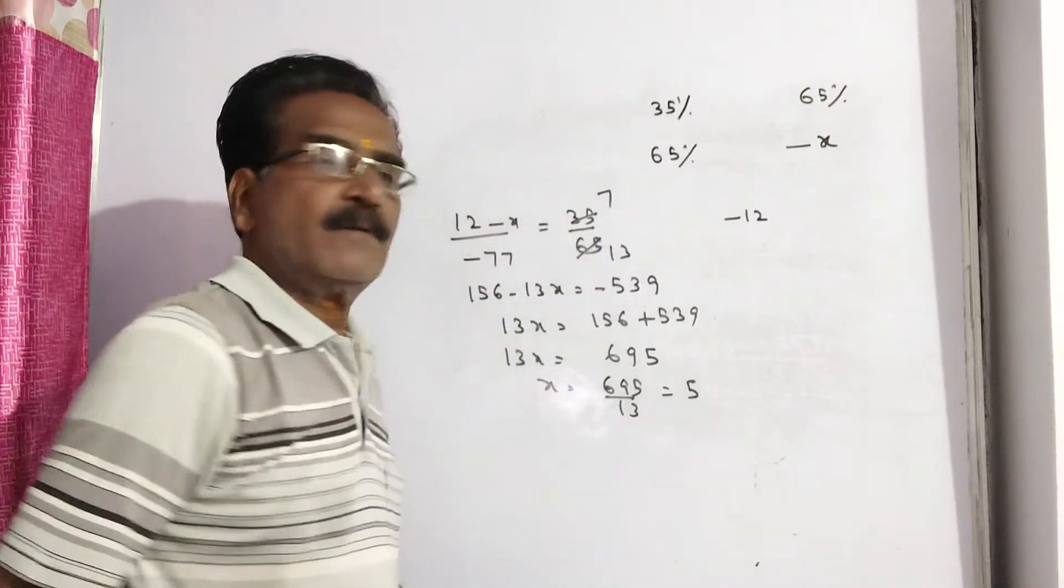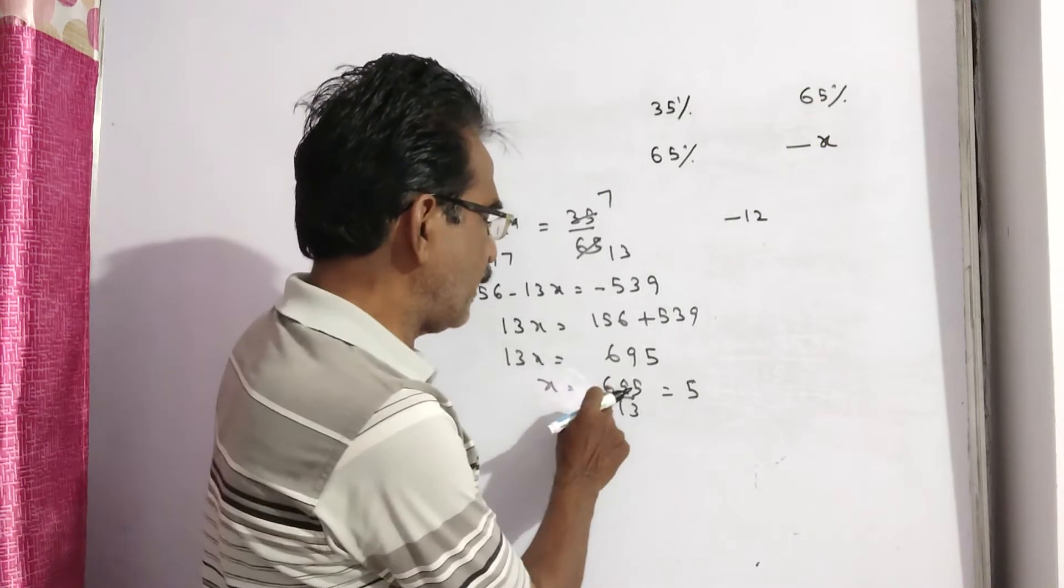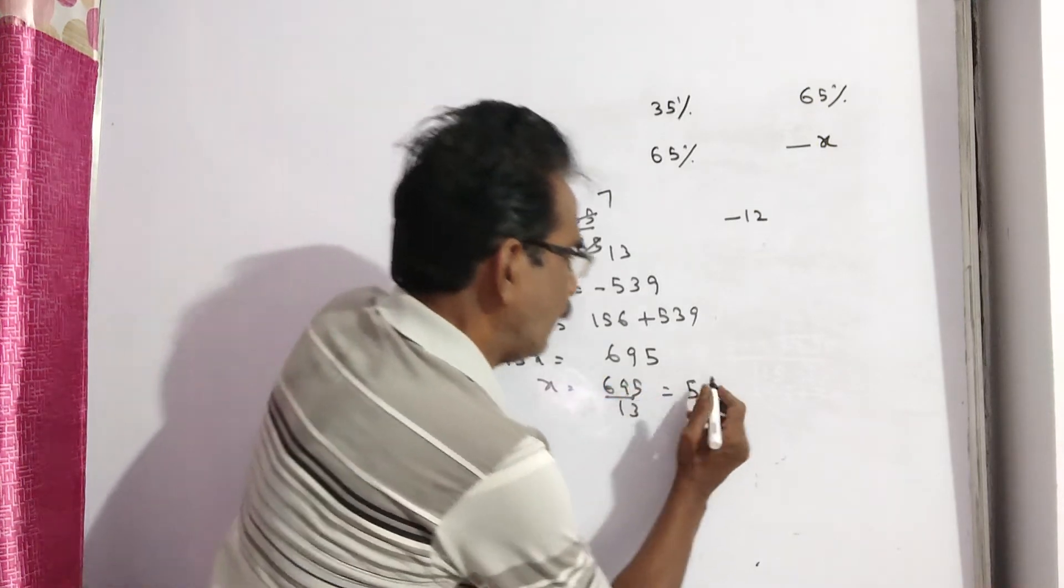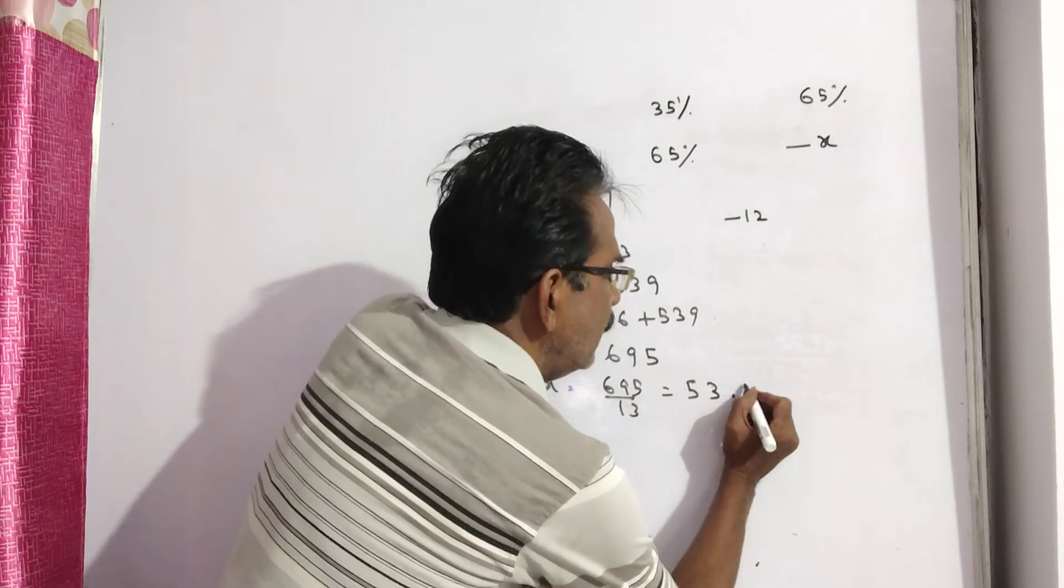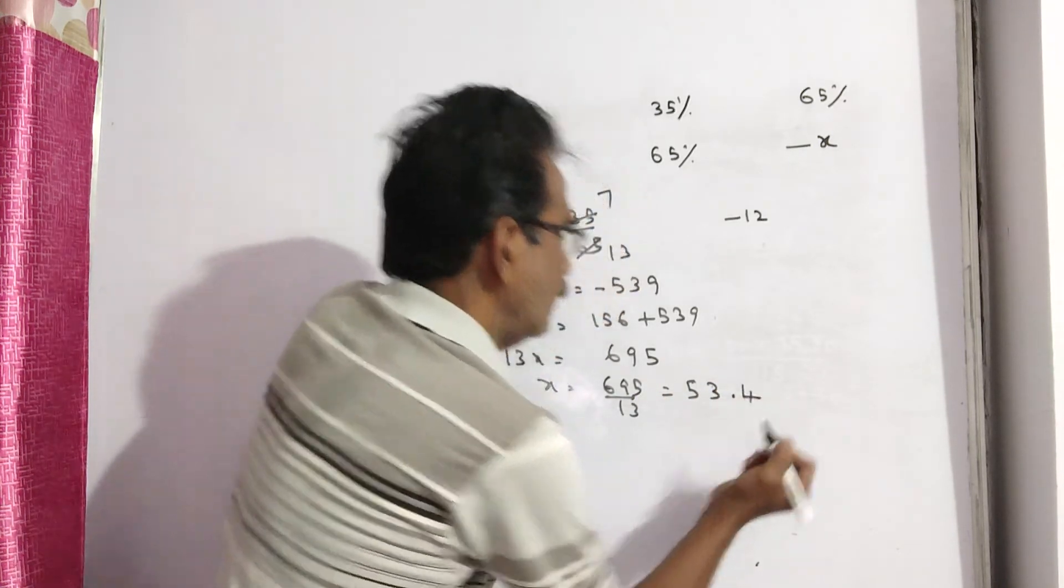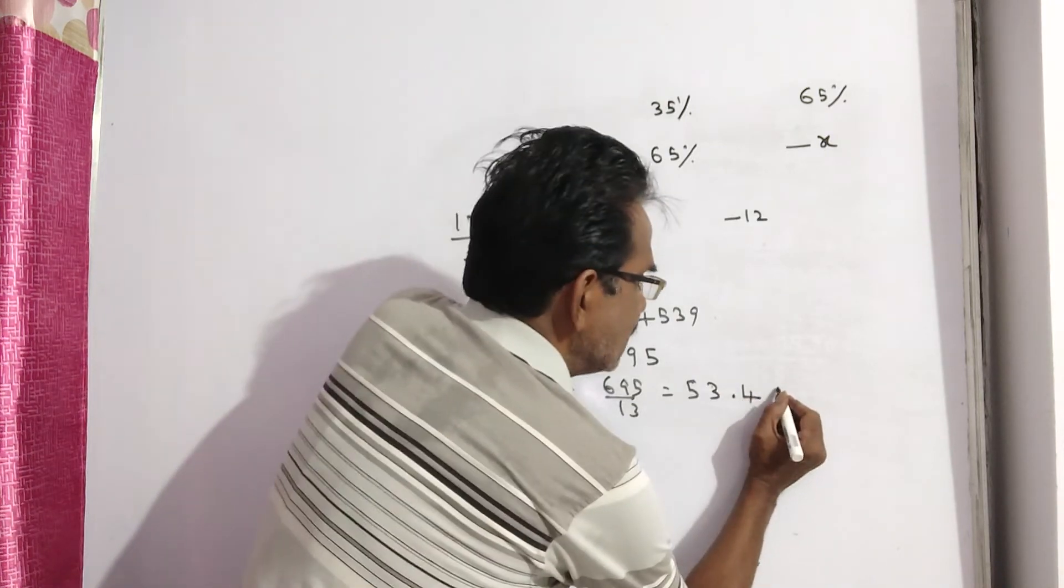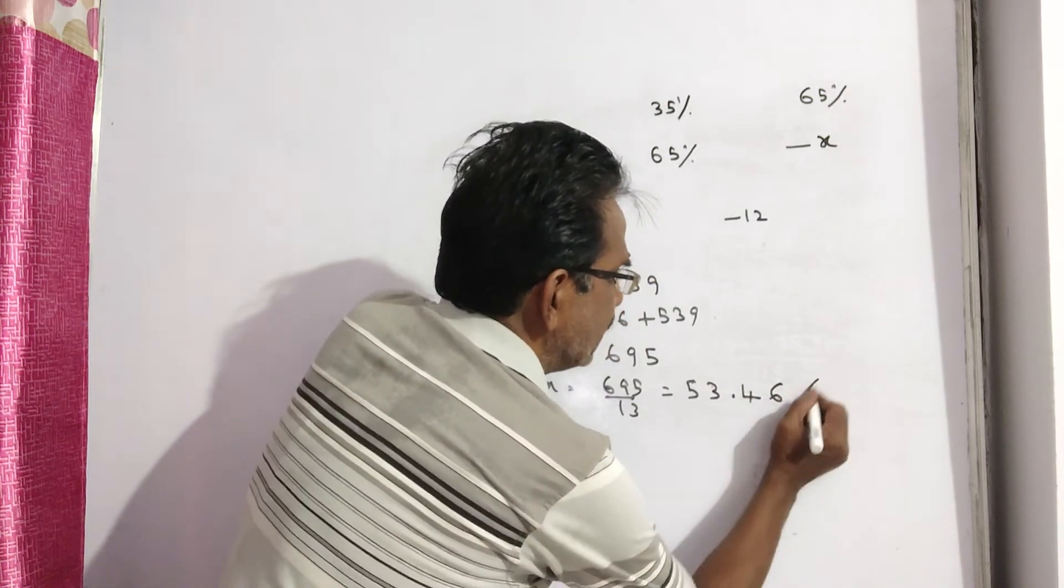13 times 5 is 65, 3 fives is 65. 4, 45. 13 times 3, that is 39. 6 remaining. 13 times 4 is 52. So 13x is equal to 53.